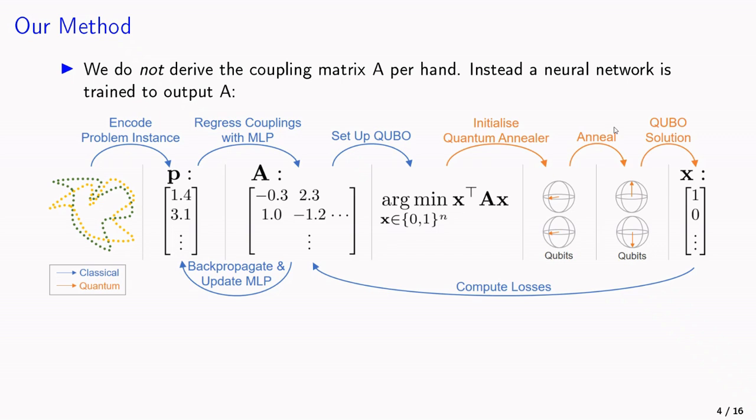Our method is depicted in this figure here. So we start with some problem instance, then this is encoded in this vector P, which is the input of the MLP. The output of the MLP is the coupling matrix, which is used to set up the QUBO. The QUBO is then solved with a quantum annealer, and at the end, a classical bit string is obtained. This is then used to compute the losses, and with backpropagation, one can update the MLP.